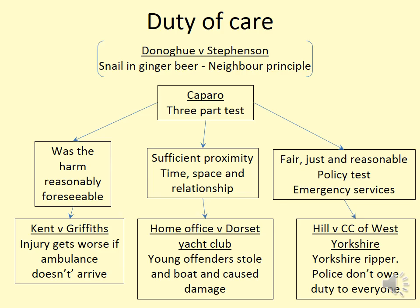On duty of care, you should have something like this: starting at the top with Donoghue and Stevenson with the neighbour principle, then moving into the Caparo test establishing whether a duty of care is owed — was the harm reasonably foreseeable, supported by Kenton Griffiths; is there sufficient proximity between the claimant and defendant in time, space, and relationship, supported by Home Office and Dorset Yacht Club; and is it fair, just, and reasonable to impose a duty, relevant where the defendant is a rescuer or emergency service, as supported by Hill and the Chief Constable of Yorkshire Police.